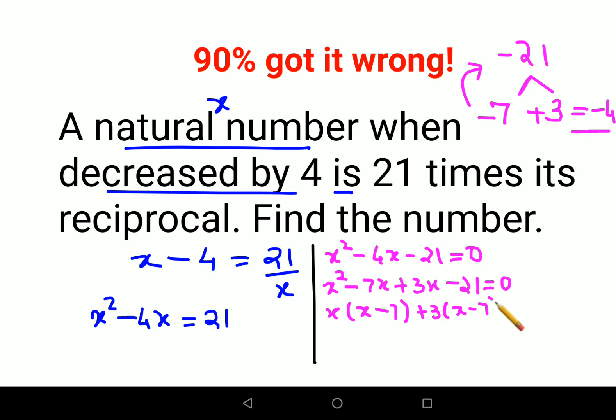Students, please understand: if you're solving a quadratic, these two brackets have to be the same. If these two brackets are not coming out to be same, it means you have done some error while factoring. This comes out to be x minus 7 into x plus 3 equals 0.